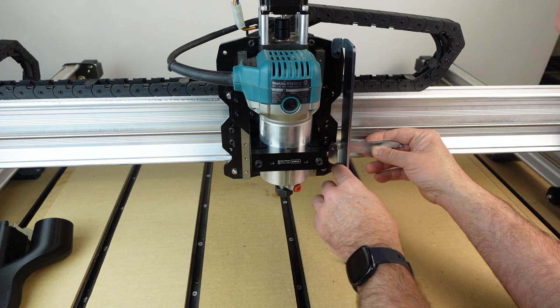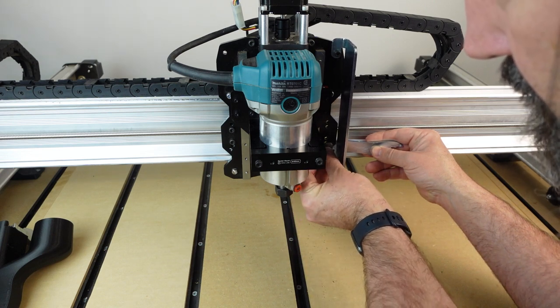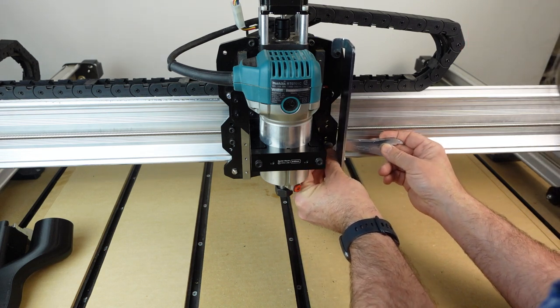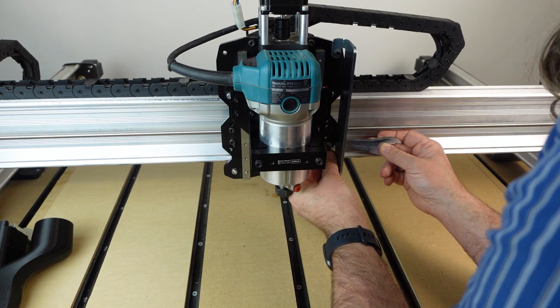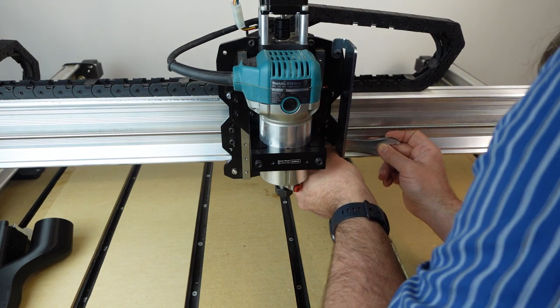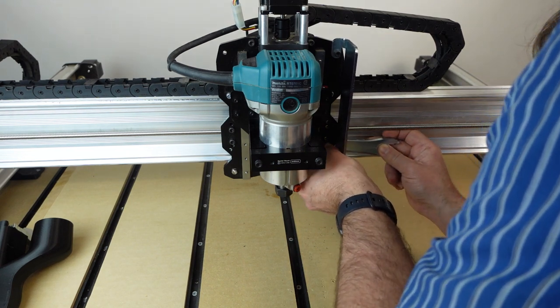Slide the nut and the wrench behind the gantry plate. Take the other screw and in the bottom hole of the router mount find the matching hole in the gantry plate and push it through. Align with the nut and tighten by hand.